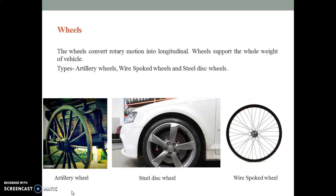Next, we will discuss about wheels. Wheels are a very important part of a component of an automobile. Generally, wheels convert rotary motion into longitudinal motion and support the whole weight of the vehicle. There are three types: Artillery wheels, wire spoked wheels, and steel disc wheels. Generally, these wheels are legs of the vehicle which carry it into far-off distances.